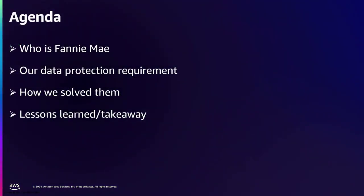Fannie Mae is a mortgage provider that supports banks and other financial services that provision mortgages. For this talk, we're going to discuss a little bit of our history, why we chose AWS, what data protections we've utilized on AWS, some of the requirements for data protection, and why and how we solve this problem.